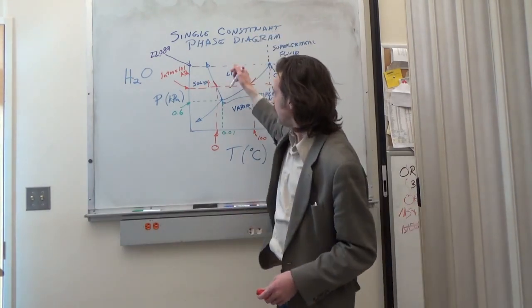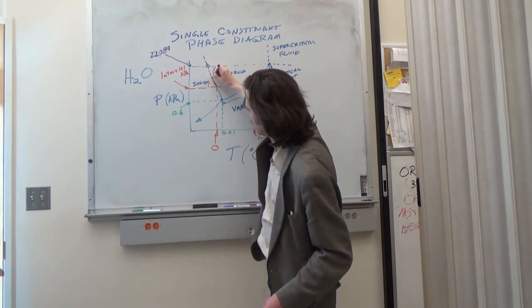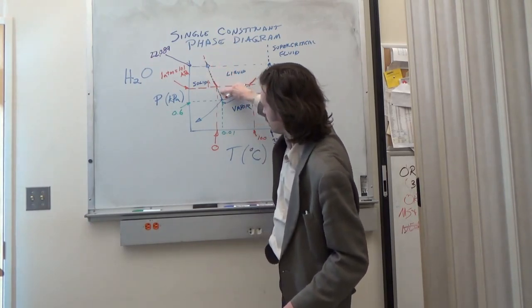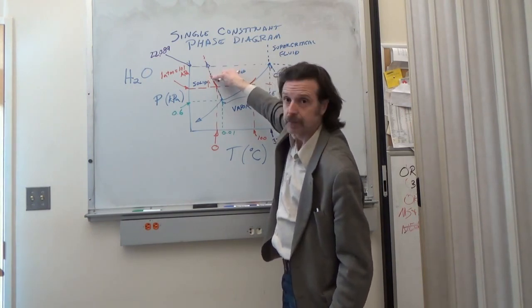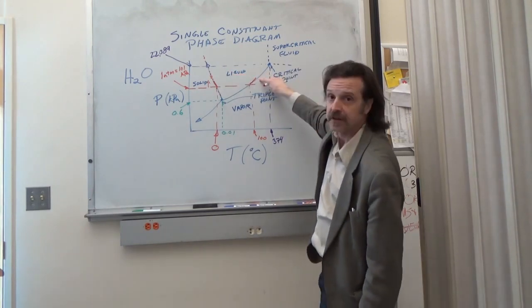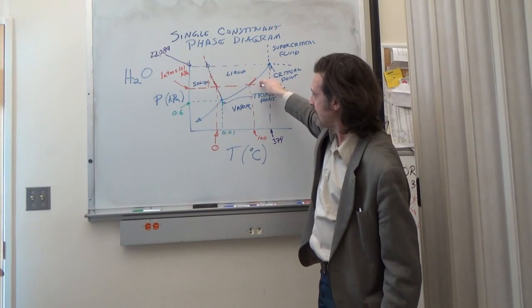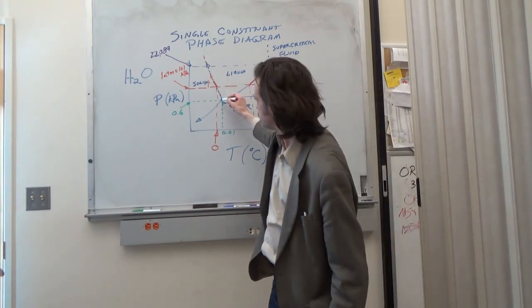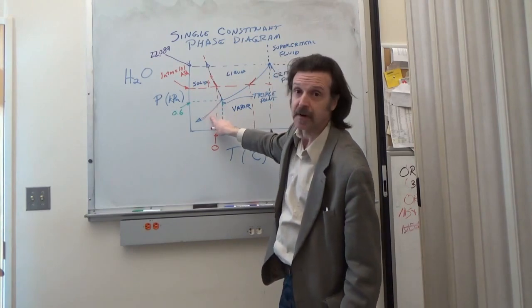Now on the line, so for example anywhere on this line, you have both solid and liquid present. Any point on this line you have both liquid and vapor present. At any point on this line you have both a solid and a vapor present.